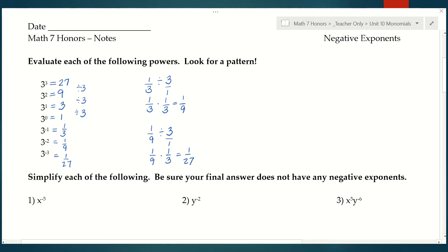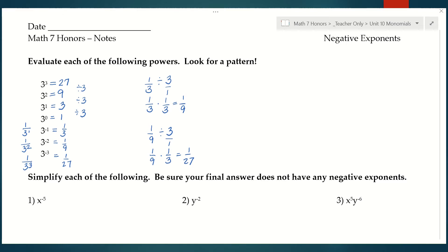Anytime you have a negative exponent, your answer is going to be a fraction — always a unit fraction, meaning the numerator is always 1. Your denominator is whatever your base is, but to the positive power. So 3 to the negative first is 1 over 3 to the positive first; 3 to the negative second is 1 over 3 to the positive second; and 3 to the negative third is 1 over 3 to the positive third. That's how negative exponents work, because if you continue the pattern, it always turns into a fraction because you're dividing.